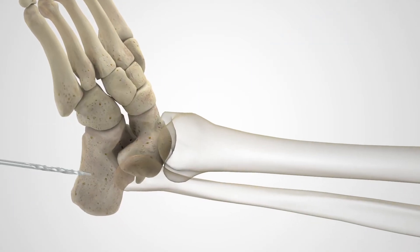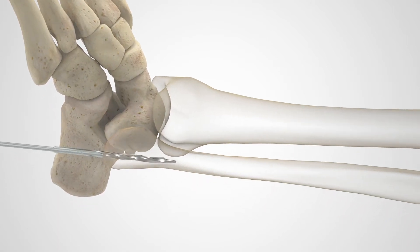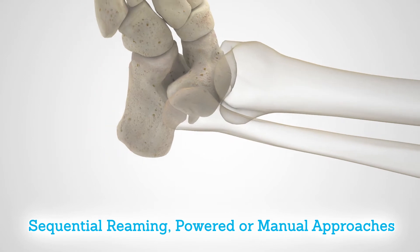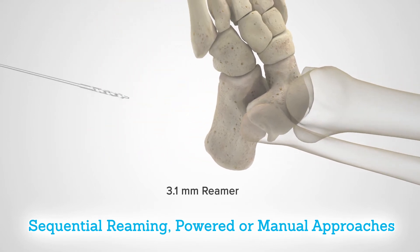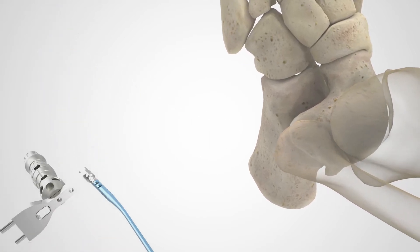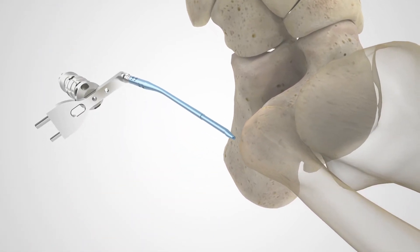Using a minimally invasive technique, the Fibula Nail 2 is designed to be inserted through a small incision percutaneously. Sequential reaming offers a straightforward method for intramedullary canal preparation through powered or manual approaches.